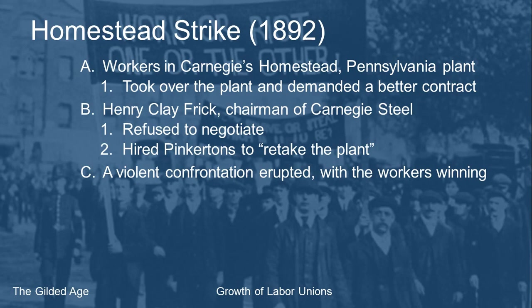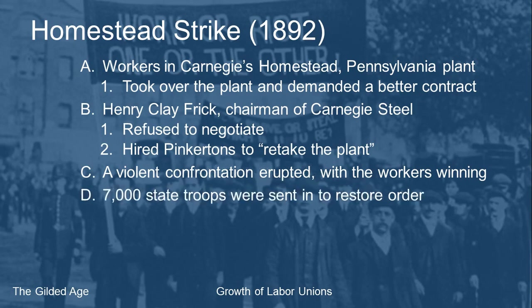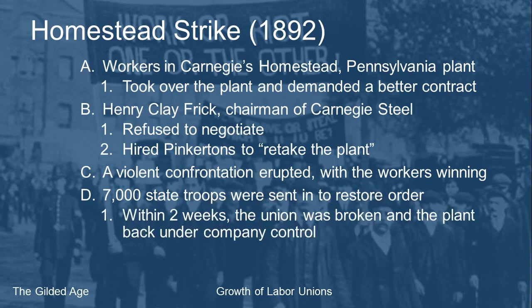Unfortunately for the Pinkertons, as the barges came downriver they were spotted, and workers were there to meet them — opening fire. The Pinkertons fired back, but were pinned down on the barges, several wounded, before finally surrendering. They had to march out of town while the families and friends of plant workers lined the road yelling, throwing things, and hitting them. It took the state militia and the army going in to restore order, forcing the strikers out. The strike lasted only about two weeks before being broken.